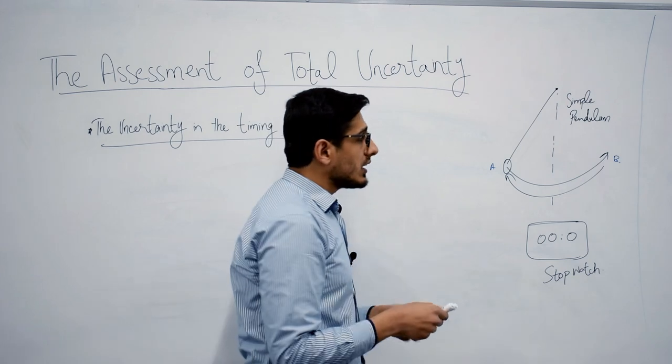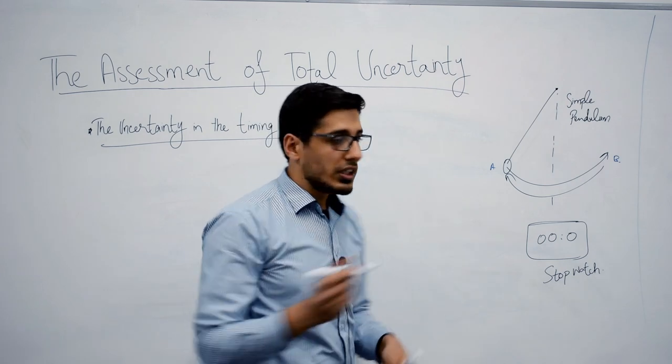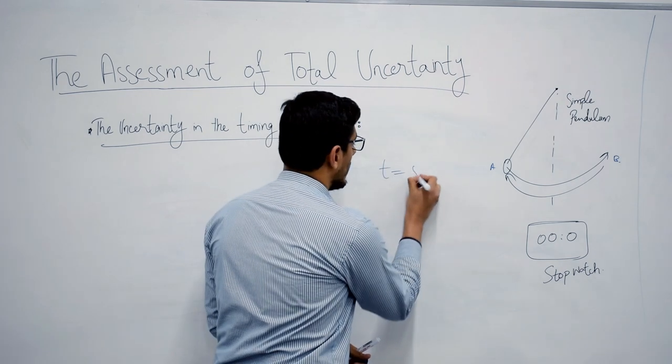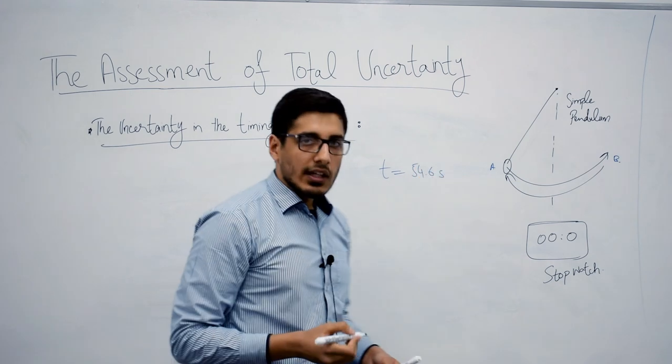So let's say in this case I measure the total time for 30 oscillations, and the time is 54.6 seconds.